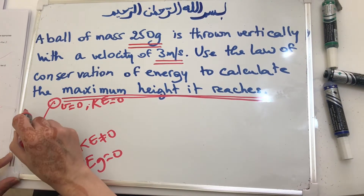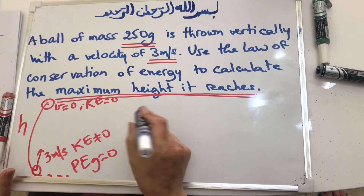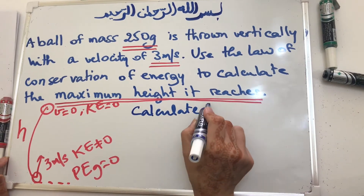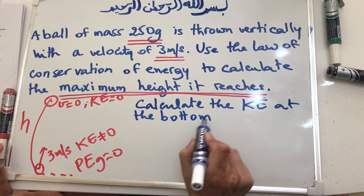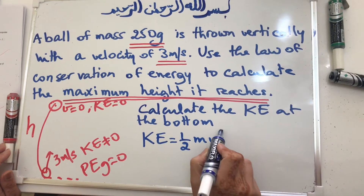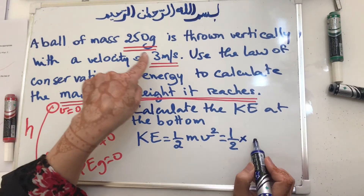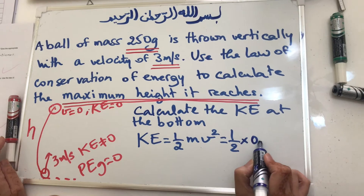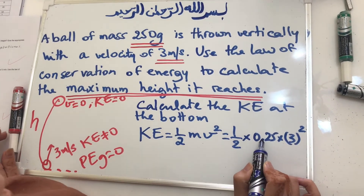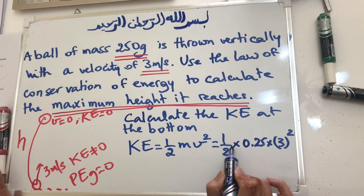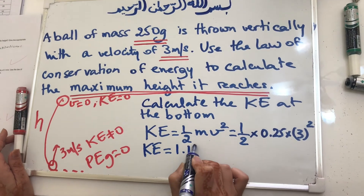We are after this H. We could ask the question step by step. The first step would be to calculate the kinetic energy at the bottom. The formula for kinetic energy is half m V squared. The half is a half, this mass is in grams so I'm going to convert it to kilograms by dividing by 1000 — 250 divided by 1000 is 0.25. Then V is 3 squared. You take 3, square it, multiply by 0.25, then multiply by 0.5. We find that the kinetic energy is 1.125 joules.